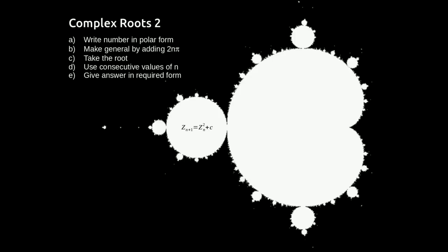Then, because we've got that 2nπ in there, we're going to take consecutive values of n. So if it was the cubed root there are three answers, so we might take 0, 1 and 2 — as long as they're consecutive it doesn't matter. One thing people often do is use −1, 0 and 1, going either side of 0. Equally you could go for 100, 101 and 102, although I don't suggest that — you might confuse the marker.